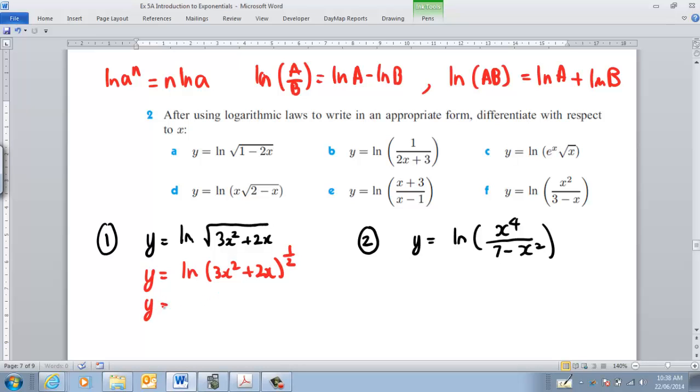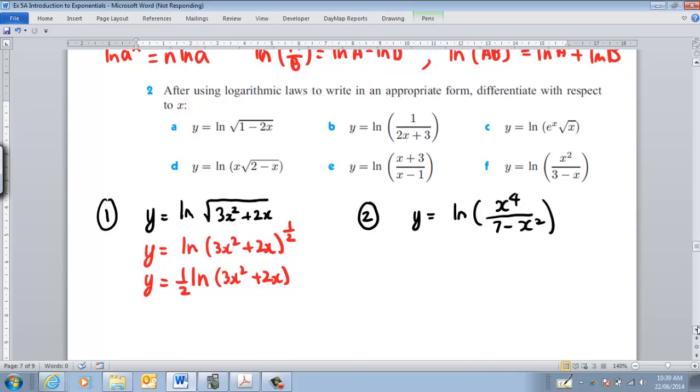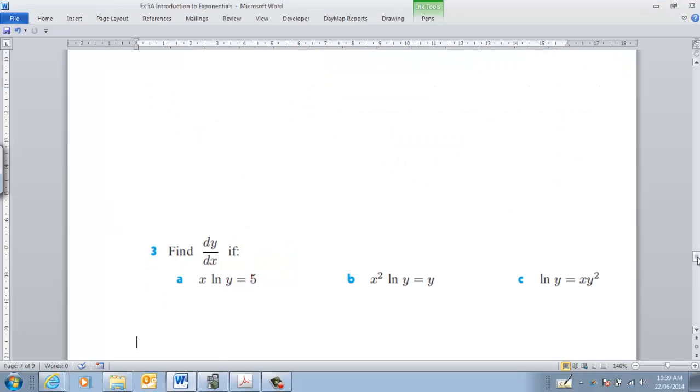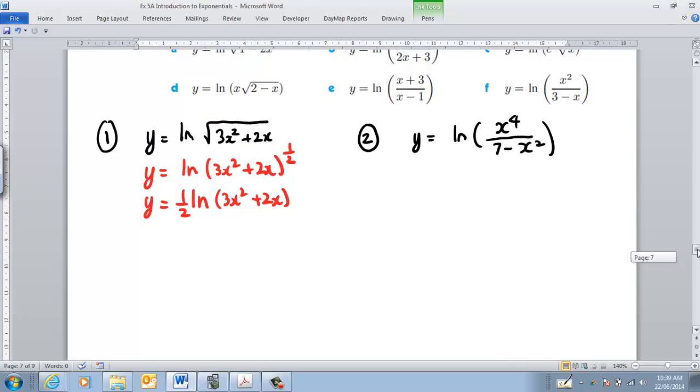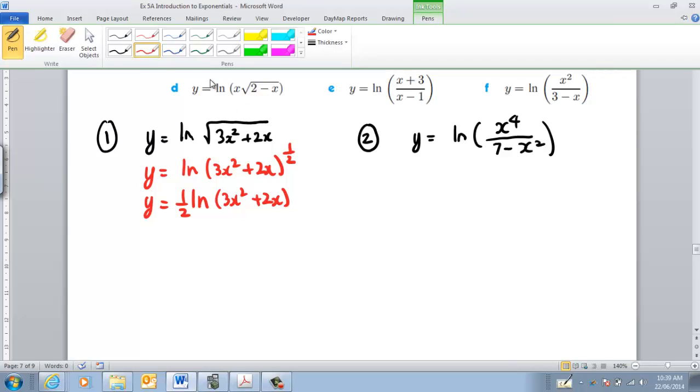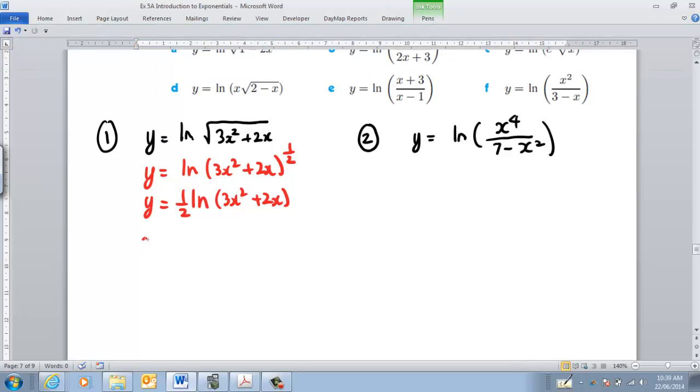So that means that my function here is a half LN of 3x squared plus 2x. So then when I do my derivative of this particular function, then what I can do is I can say then that my dy dx is equal to a half and that doesn't change, it's just a constant value.